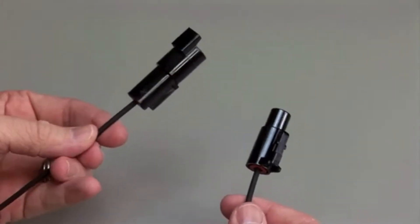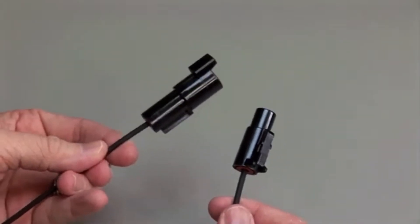Repeat the same process for the receptacle and the plug halves of the connectors. Make sure to insert the contacts into the rear grommet.